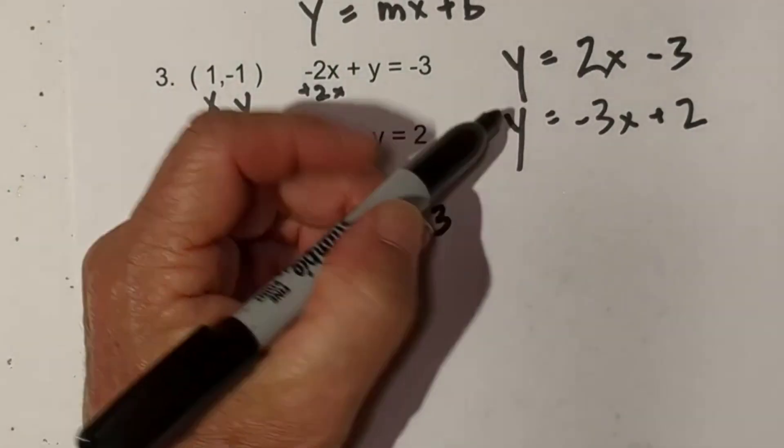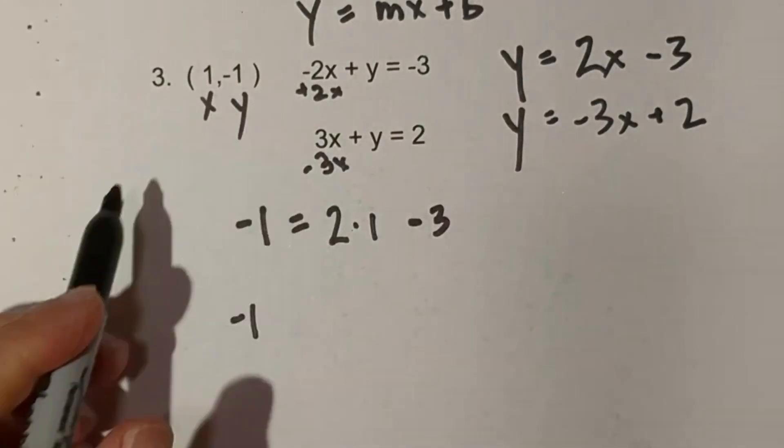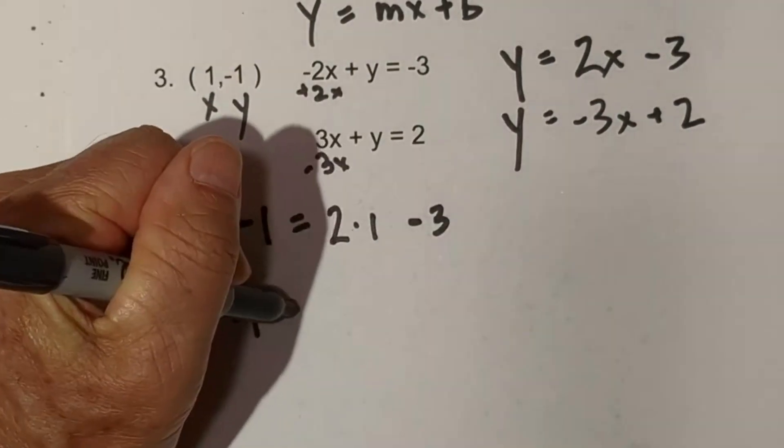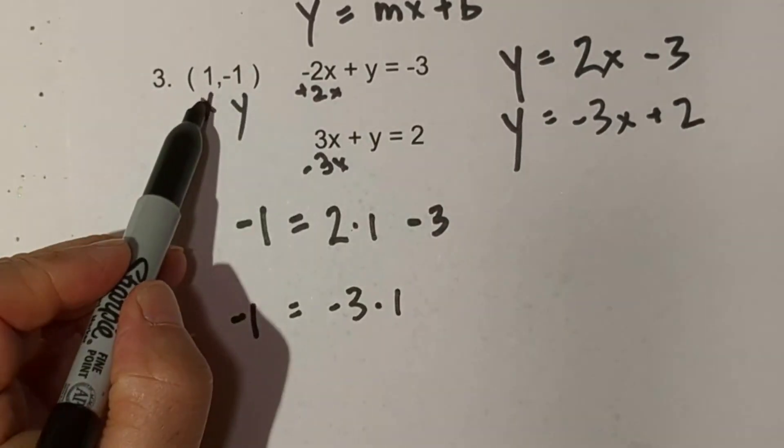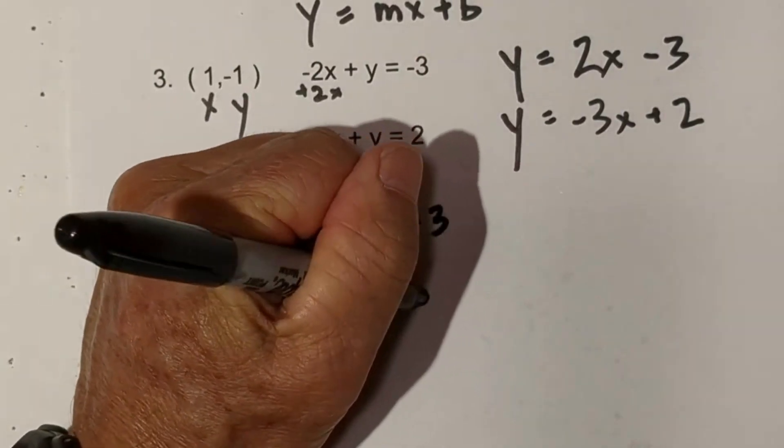And then for the second one we have -1, because remember the y, equals -3 times 1, remember the x there, plus 2.